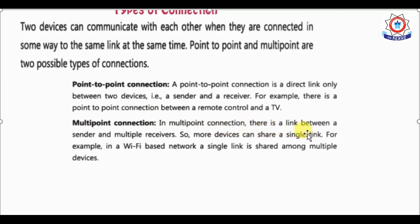In a multipoint connection, there is a link between one sender and multiple receivers, so more devices can share a single link. For example, a Wi-Fi network is a single link shared among multiple devices. We can connect multiple mobile phones, computers, and laptops to one Wi-Fi device.